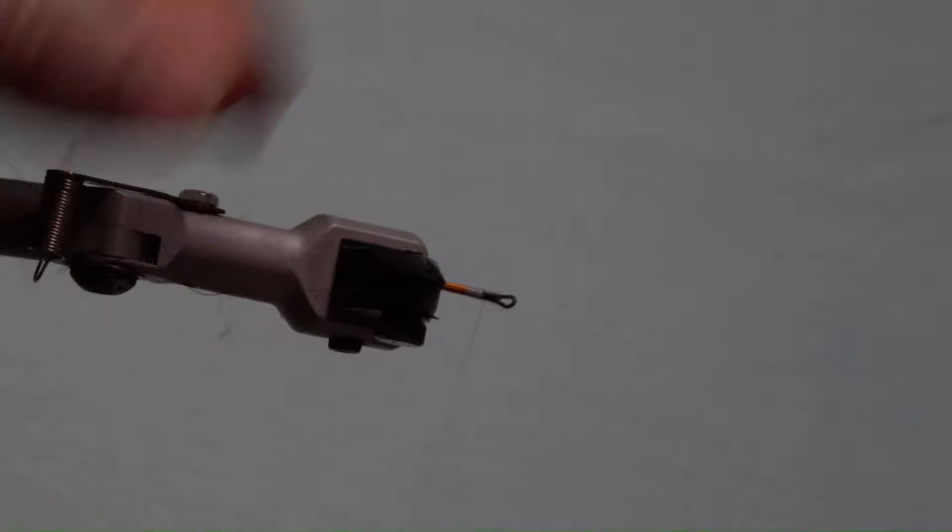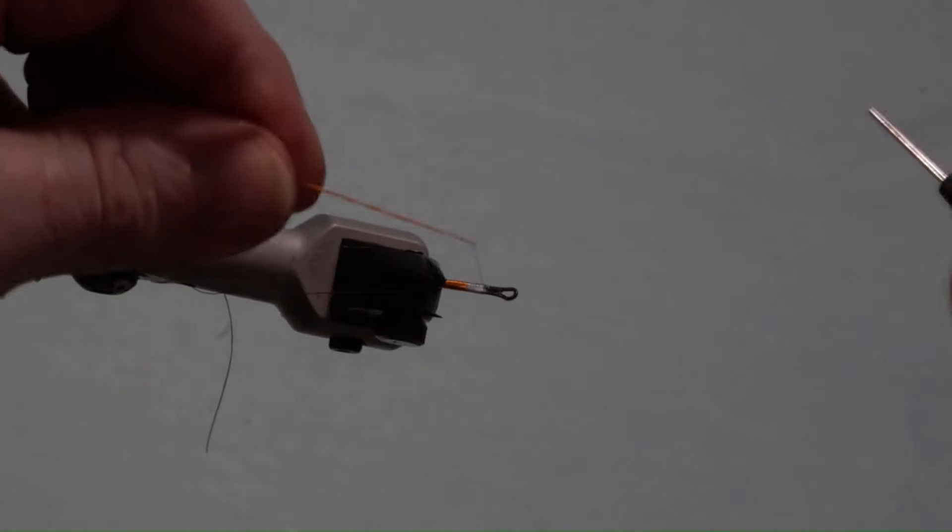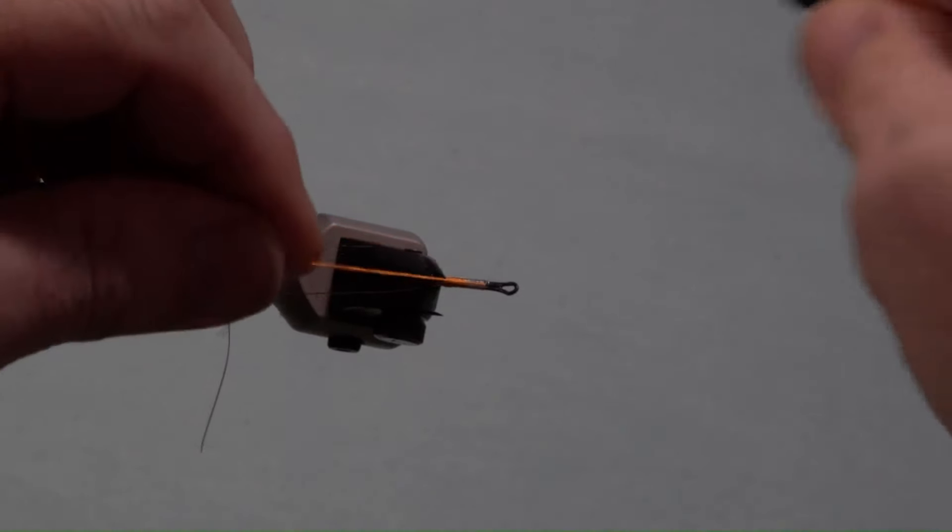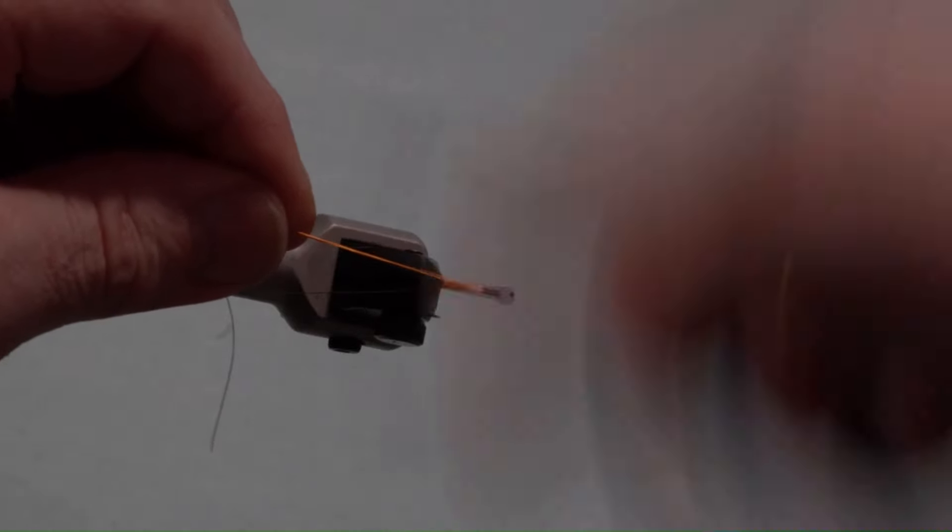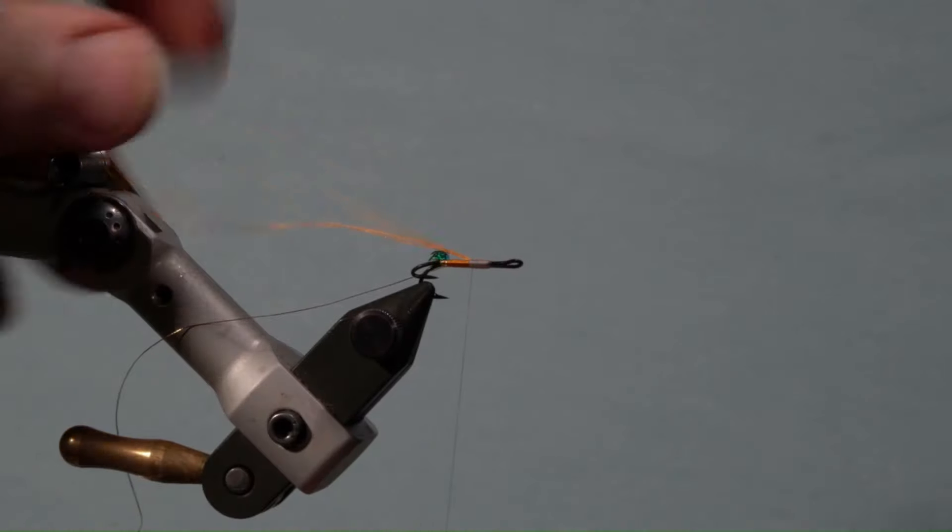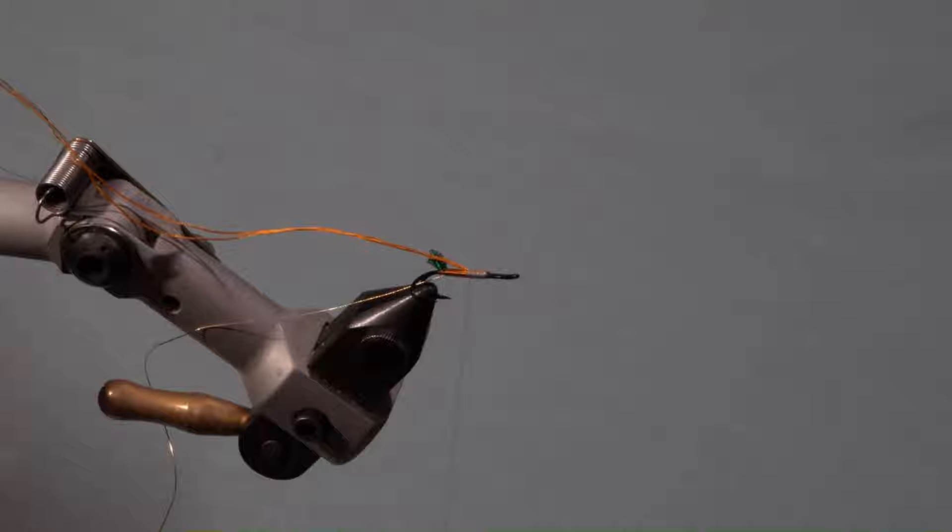Next, take the excess gold silk floss and fold it over the thread and secure it on top of the hook and wrap it back towards the end of the silk body and wrap it forward to the start. This will be the veil.